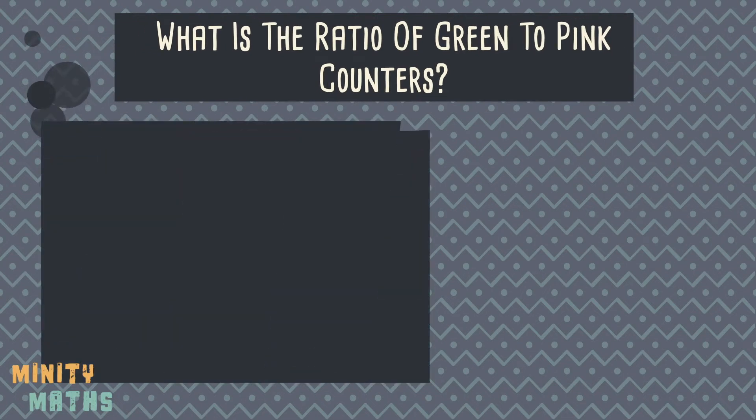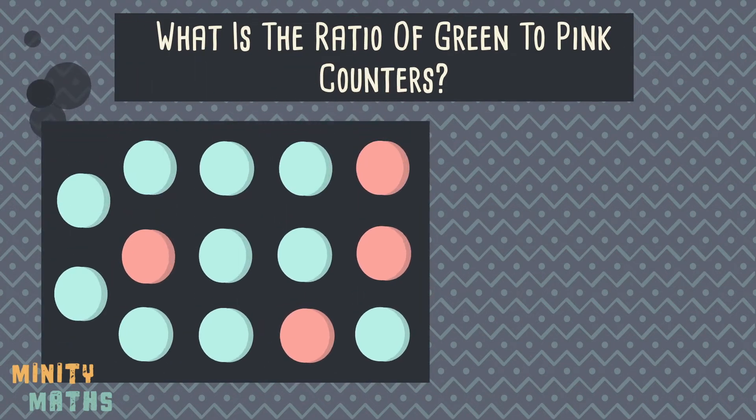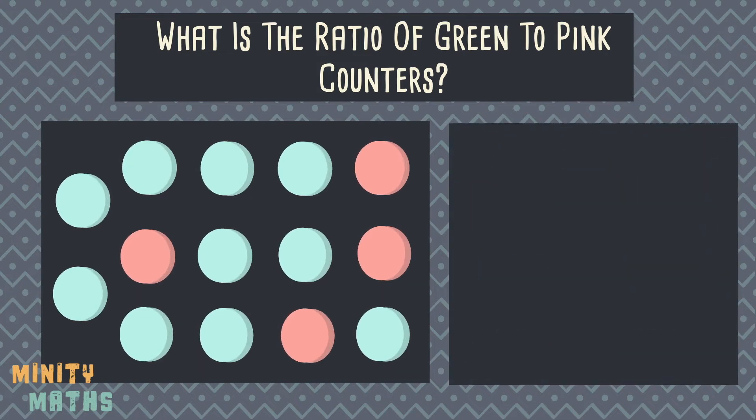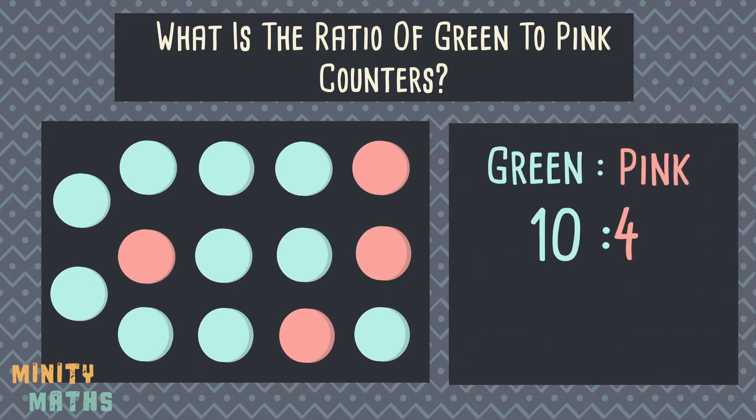See if you can work out the ratio of green to pink counters here. We can do this by counting up how many counters of each color there are. But can this be written in a simpler way? Just like with fractions, we can actually simplify ratios to make them easier to read, compare, and visualize.